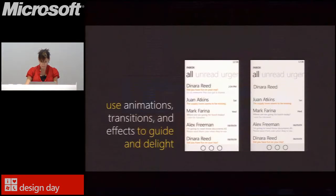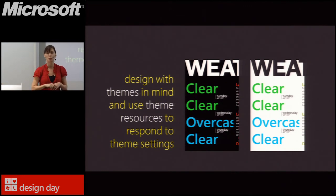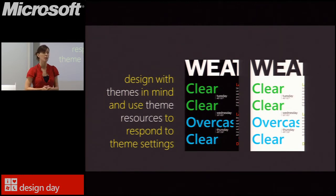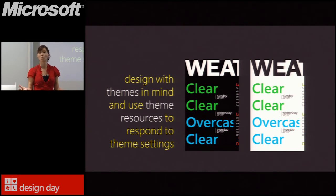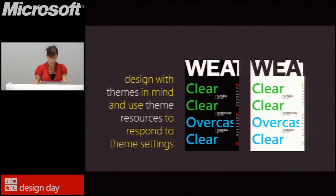Best practice four: design with themes in mind and use theme resources to ensure your application can respond to theme settings users might choose — Arturo talked about this. Users can customize the background color from dark to light and choose an accent color. If you want to customize colors for specific branding, you need to either hard-code all colors — and test for all theme settings — or if not hard-coding, be sure you test every theme combination to avoid usability issues.